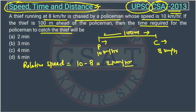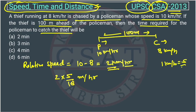The distance between the police and thief is in meters, so we will convert the speed from km per hour to meters per hour. We multiply by 5/18, because 1 km per hour equals 5/18 meters per second. So the relative speed becomes 2 into 5/18 meters per second.